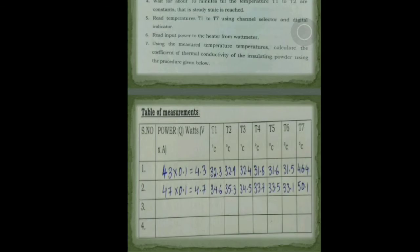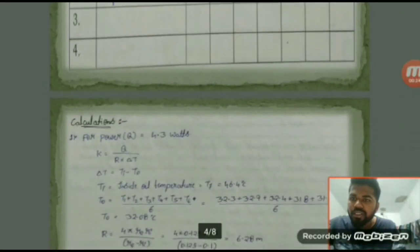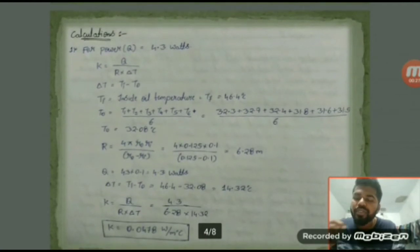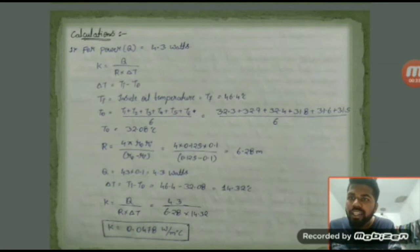Coming to calculations. The coefficient of thermal conductivity K is given by Q divided by r delta T. Here, Q is power input, r is the shape factor, and delta T is the change in temperature.